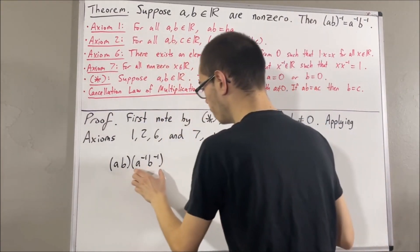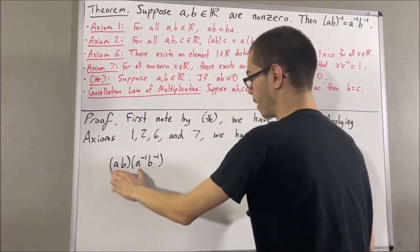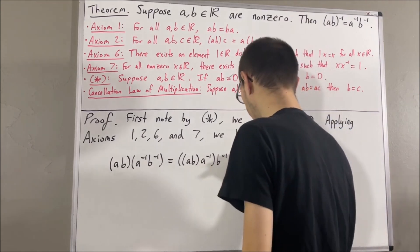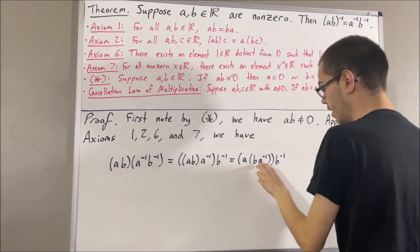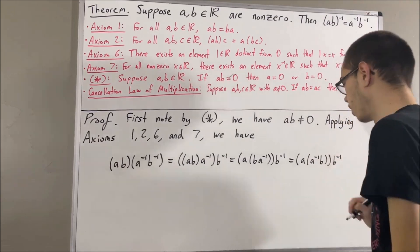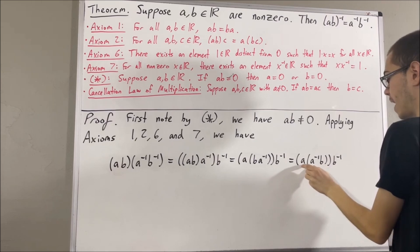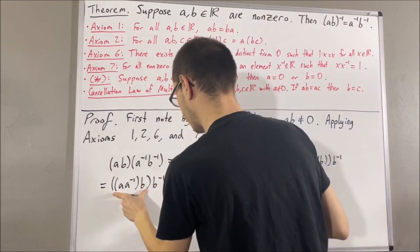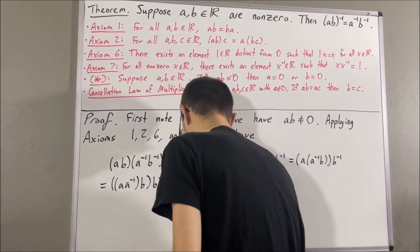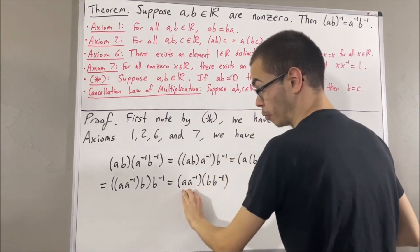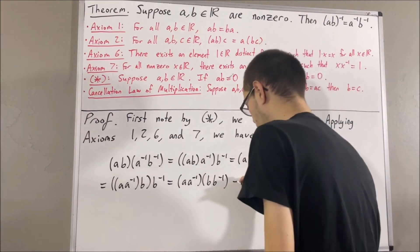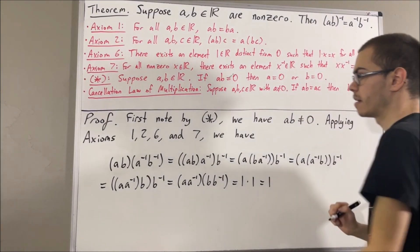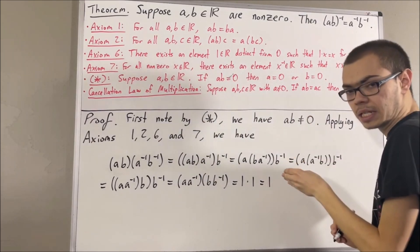First, by axiom 2, we can move the parentheses around AB times the reciprocal of A. Applying axiom 2 again, we can move the inner parentheses around B times the reciprocal of A. Applying axiom 2 again, we can move the outer parentheses around B times the reciprocal of B. Then, by axiom 7, A times the reciprocal of A is equal to 1, and B times the reciprocal of B is equal to 1, so we have 1 times 1. By axiom 6, 1 times 1 is equal to 1. And then by axiom 7 again, 1 is equal to AB times the reciprocal of AB.